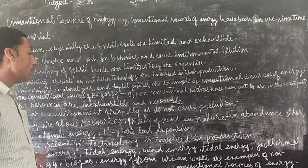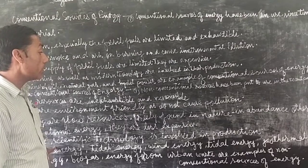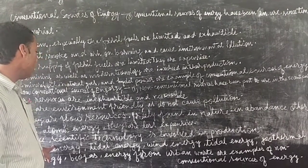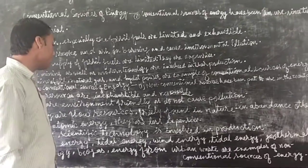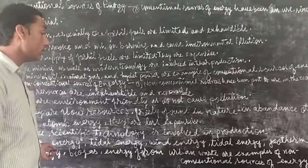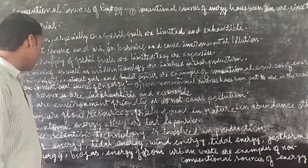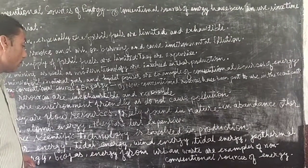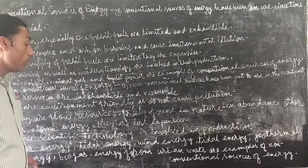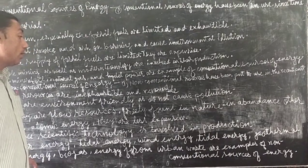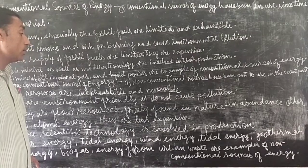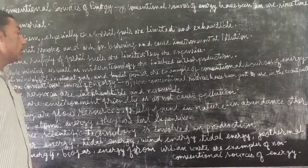Modern technology is involved in their production. Solar energy, tidal energy, wind energy, geothermal energy, biogas energy, and energy from the urban waste material are the examples of non-conventional sources of energy.